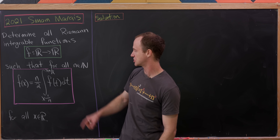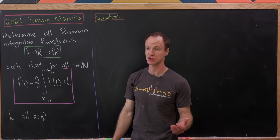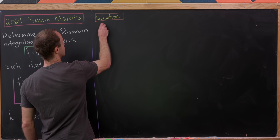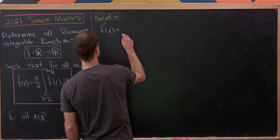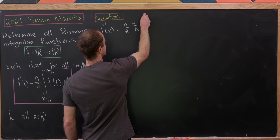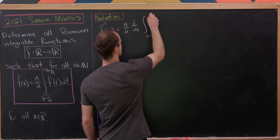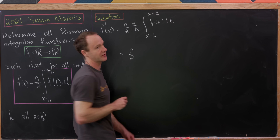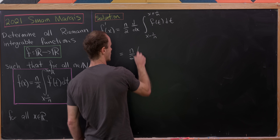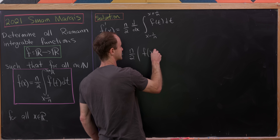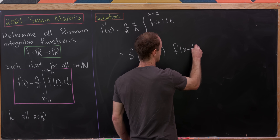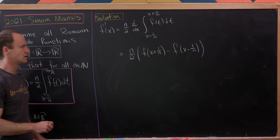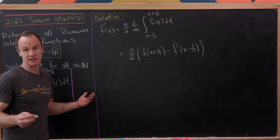We're going to start with the fact that any function defined like this in terms of an integral is differentiable, simply because of the fundamental theorem of calculus part 2. That means we're able to write f prime of x as n over 2 times the derivative with respect to x of the integral from x minus 1 over n to x plus 1 over n of f of t dt. Applying FTC part 2, this equals n over 2 times f of x plus 1 over n minus f of x minus 1 over n. Since this holds for all natural numbers n, we can take a limit.